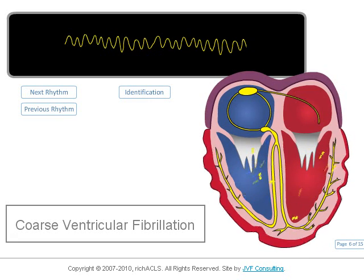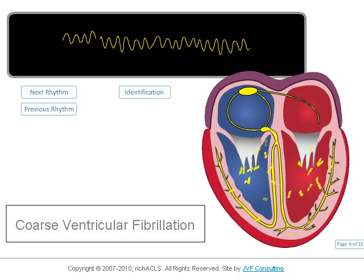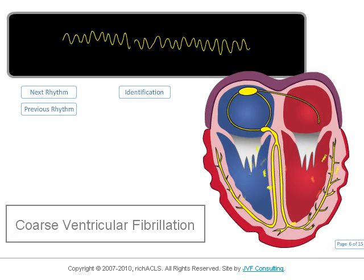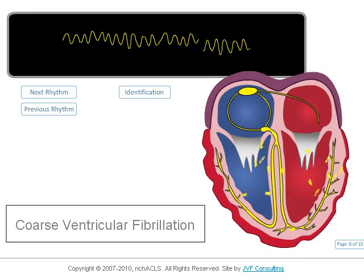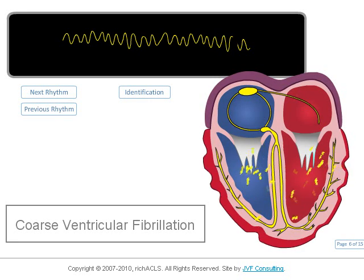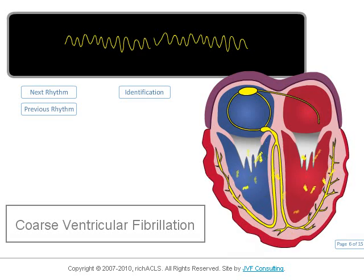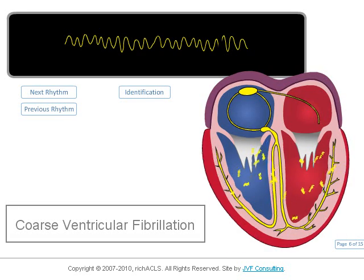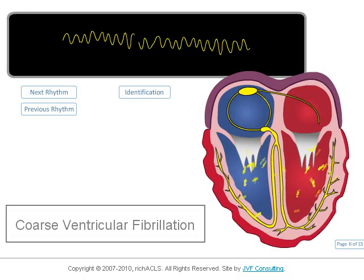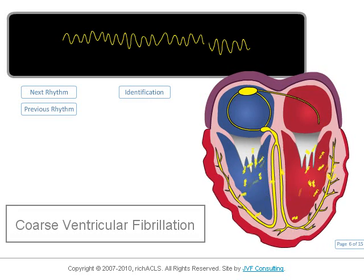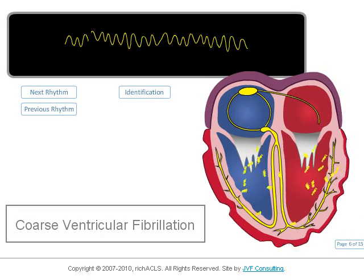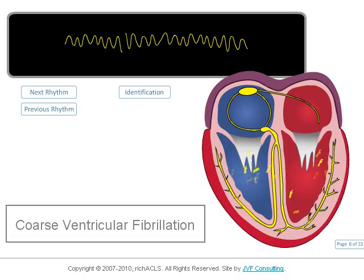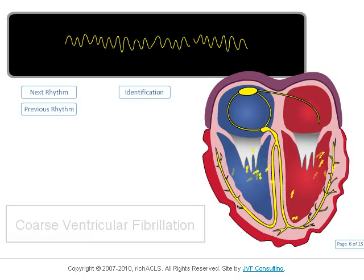This fibrillatory rhythm is not unlike atrial fibrillation, except with ventricular fibrillation, there is no cardiac output. Coarse ventricular fibrillation is of recent onset and has a fairly high probability of successful defibrillation, since the substrate for metabolism has not yet been depleted.